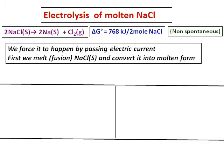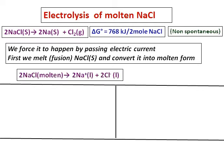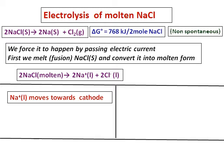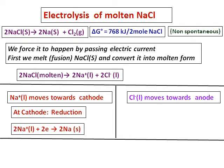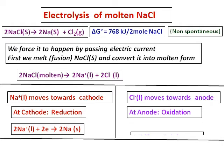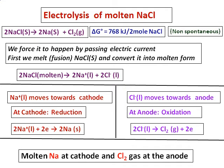We force this reaction to happen by passing electric current. First, we fuse — that is, melt — solid sodium chloride into its molten form. When electric current is passed through it, it ionizes into sodium ions and chloride ions. The positive sodium ion moves towards the negatively charged cathode, where reduction takes place, gaining electrons and forming sodium metal. The negative Cl⁻ ion moves towards the anode, where oxidation takes place, and it is converted into chlorine gas. Therefore, sodium is produced at the cathode and chlorine gas is produced at the anode.